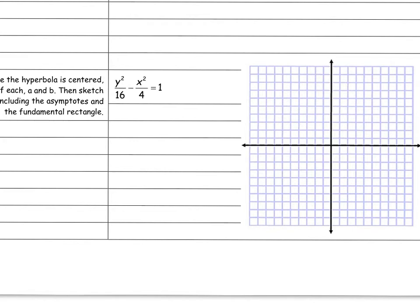I want to find my center first. Am I adding anything to my x or y? No, so they're by themselves — my center is at (0, 0). Then I also want to find a and b. We know that a is always with the x, so a squared equals 4, which means a equals 2, and b is with the y, so b squared equals 16, meaning b equals 4.